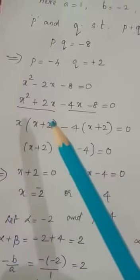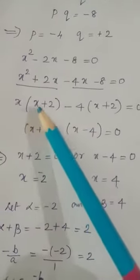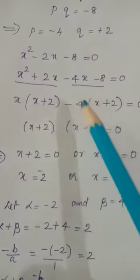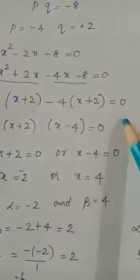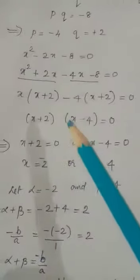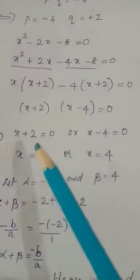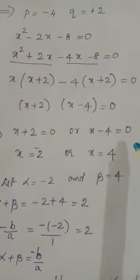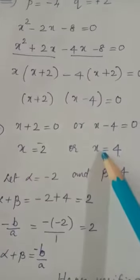Taking the common term out: x times (x plus 2) minus 4 times (x plus 2) equals 0. So the equation becomes (x plus 2) into (x minus 4) equals 0. Therefore either x plus 2 equals 0 or x minus 4 equals 0, giving x equals minus 2 or x equals 4.